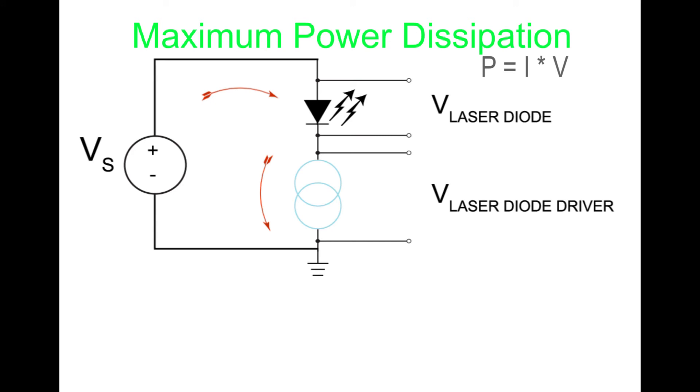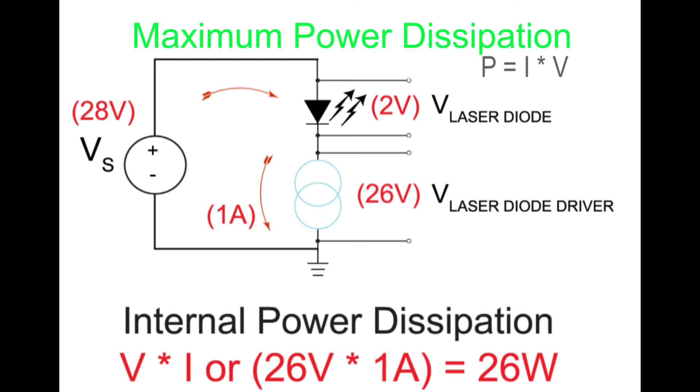Designing a laser diode system includes choosing the power supply voltage. If a 28-volt supply is chosen to drive a diode that requires 2 volts, 26 volts will be dropped across the laser diode driver. If the driver is running at 1 amp, the internally dissipated power will be 26 watts. If the internal power dissipation specification is 9 watts, the current source components will overheat and fail.